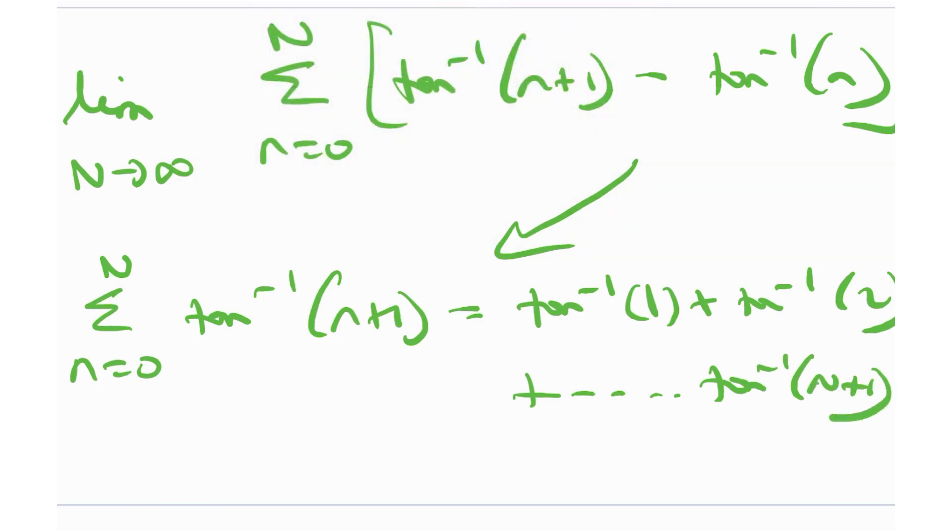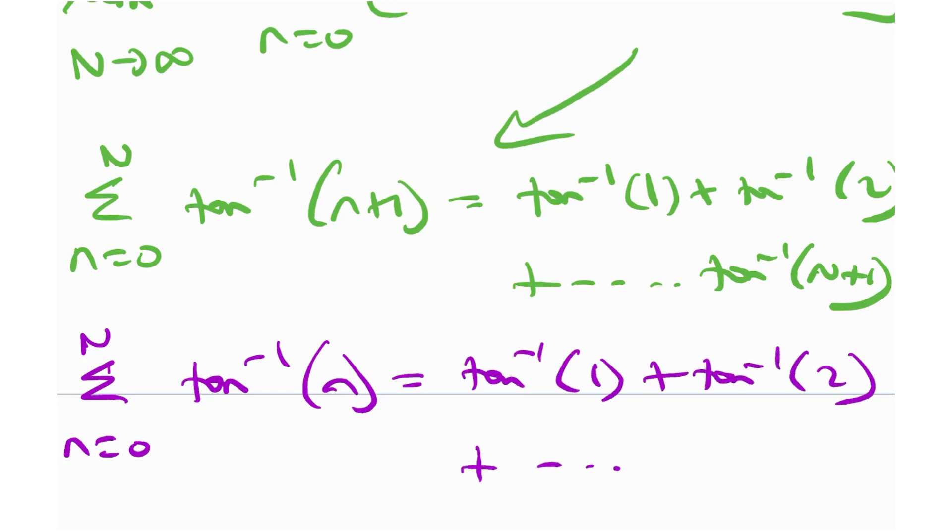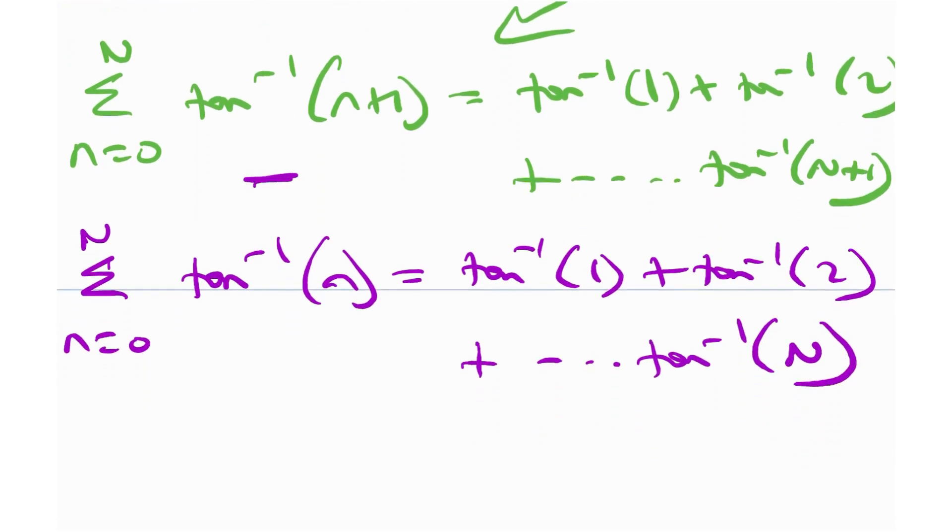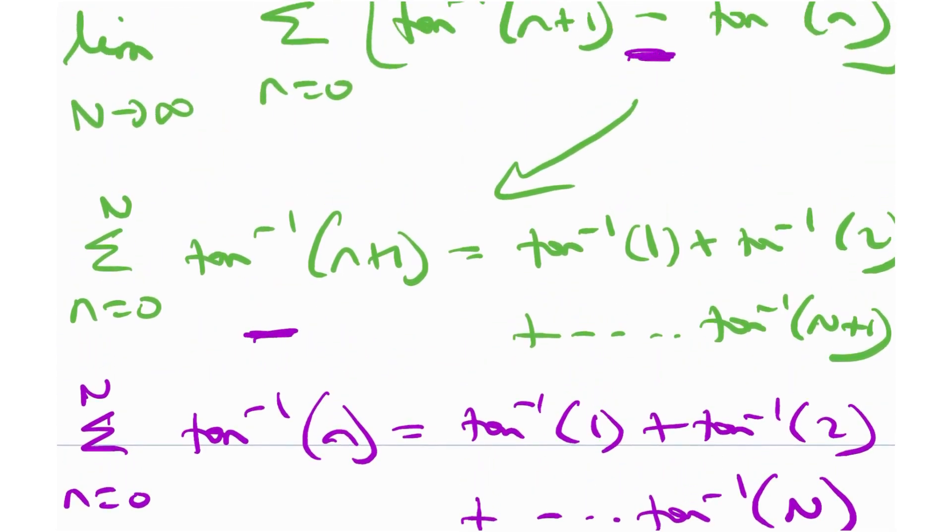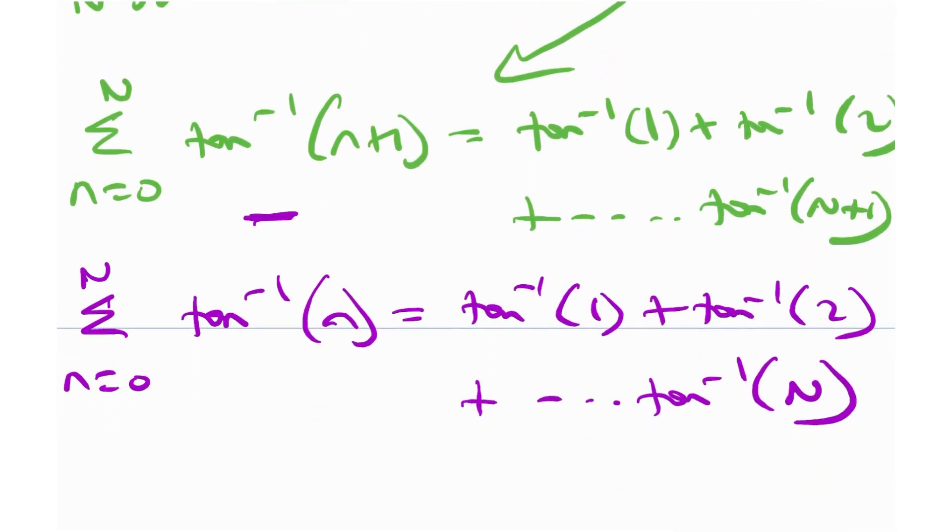Similarly, what would this summation from n is equal to 0 to N of tangent inverse n look like? It would be tangent inverse 0, but arc tan 0 is really 0. I can just ignore that. So this will again be tangent inverse 1 plus tangent inverse 2. And this would go all the way up to tangent inverse N. And once I subtract both of these quantities, a lot of things will get cancelled. Because effectively, you have a subtraction sign over here. We need to subtract these two quantities. So if you see this and this. Everything gets cancelled up to tangent inverse N.